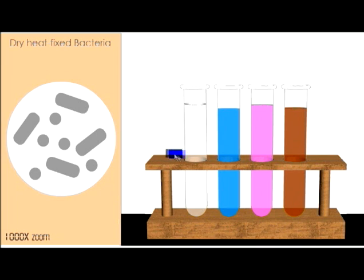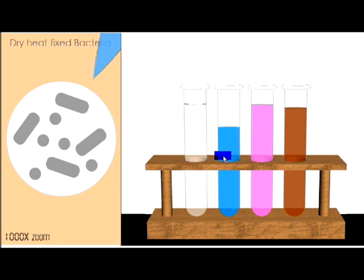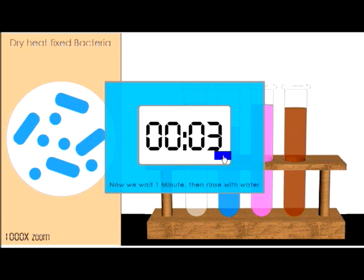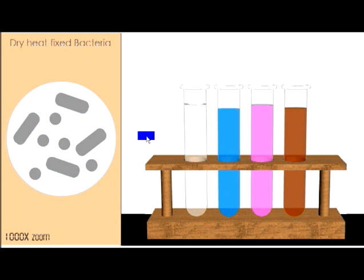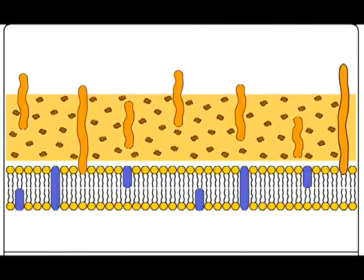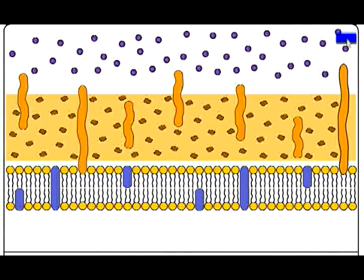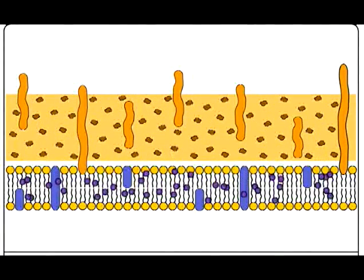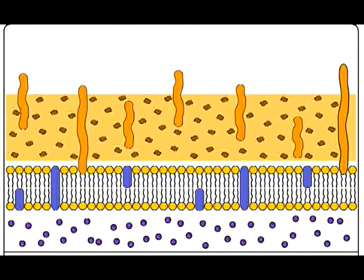Let's have a look at the gram stain technique. First, we'll start with a slide of dry-heat-fixed bacteria, and then we'll add some crystal violet — which is a bluish or purple dye — to the slide, and let that sit for about a minute. Now that we know about the structural differences, let's look at the mechanism. In a gram-positive bacteria, the peptidoglycan is represented by this orange band. The crystal violet, represented by these purple circles, works its way through that thick peptidoglycan layer and then through that phospholipid bilayer, and gets trapped beneath there.